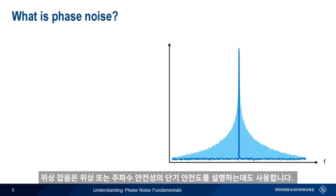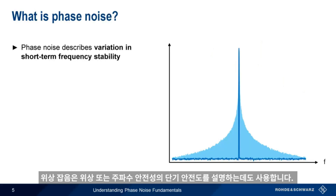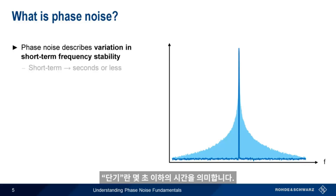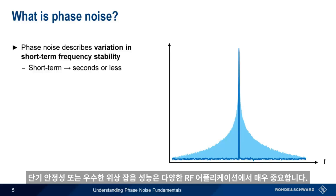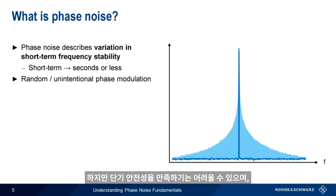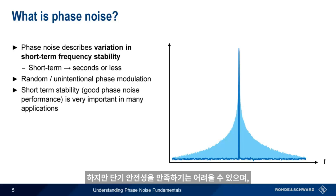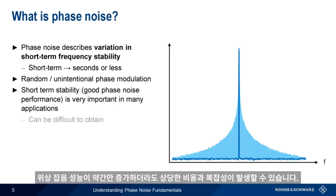Phase noise is a term used to describe short-term variations in phase or frequency stability. By short-term, we mean periods of seconds or less. Another way of defining or describing phase noise is random or unintentional phase modulation. Short-term stability, or good phase noise performance, is very important in a wide variety of RF applications, but this short-term stability can be very difficult to obtain, with substantial cost and complexity often associated with even modest increases in phase noise performance.